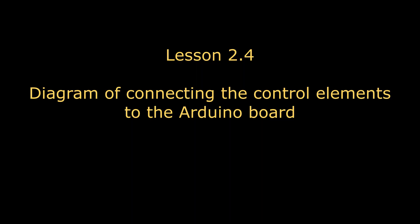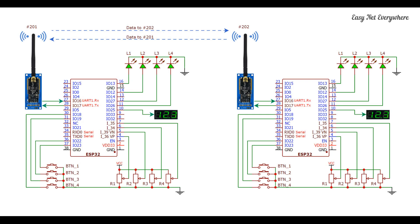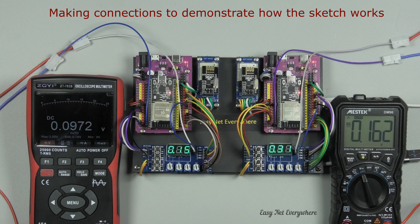In the next part of the lesson, we will check the state of the controller pins on the transmitter side and set the state of the pins on the receiver side. Let's connect the controls to the Arduino according to the figure. These are buttons, potentiometers, LEDs, and a voltmeter.